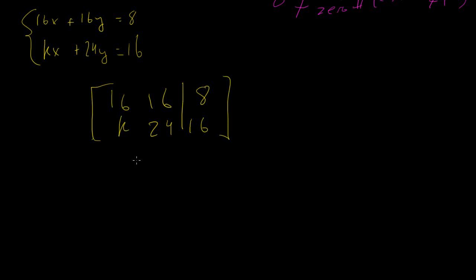Don't be afraid of the K, it's just a variable, just a parameter that's there. First, in my matrices we want to get a leading one over here. In order to get a leading one we're going to have to divide it by 16. What I'm going to do is a row operation of 1 over 16 times row 1, and I'm going to map that to row 1, and this will give me 1, 1, 1/2. Then this stays the same: k, 24, 16.